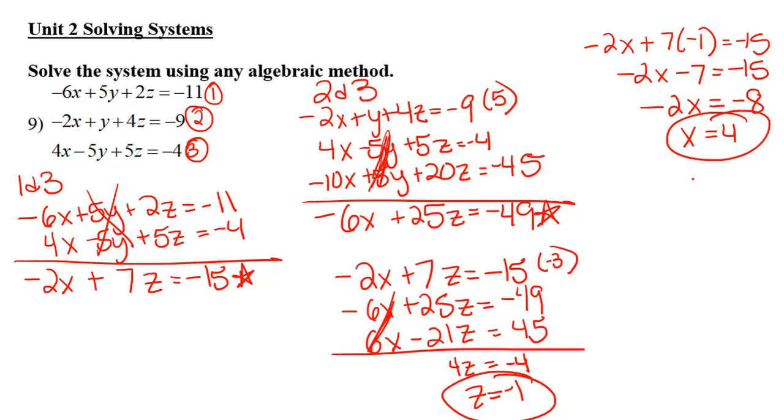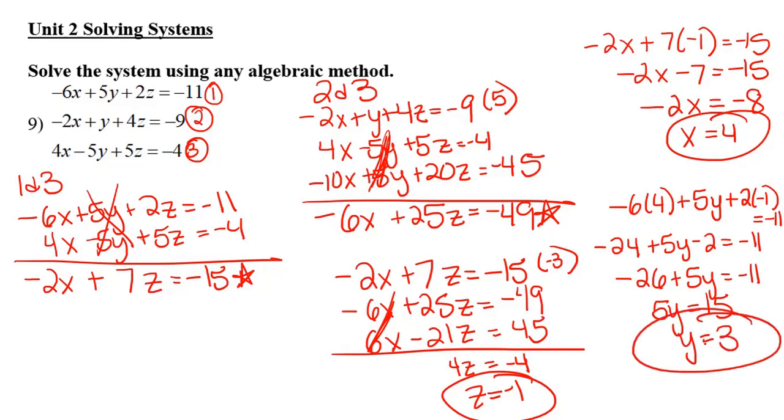So now I'm going to take my z and my x and I'm going to plug it into the top equation. So negative 6 times 4 plus 5 times y, we don't know what y is, that's the one we're trying to find, plus 2 times negative 1 is equal to negative 11. Negative 24 plus 5y minus 2 is equal to negative 11. Negative 26 plus 5y is negative 11, it looks like. So 5y is, adding 26, 15. So y is in fact 3. So my order triple is x, 4, y, 3, z, negative 1. And then remember, plug it into each of the equations, make sure you get the correct answers. That's going to help you check to make sure that you are in fact correct.